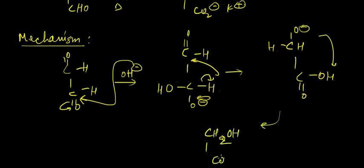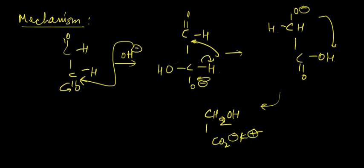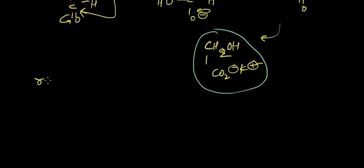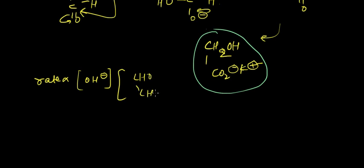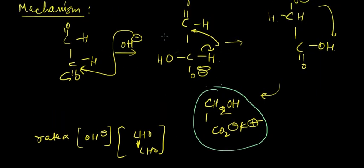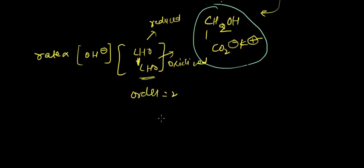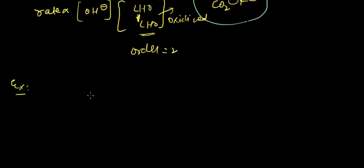The O- takes its hydrogen atom, and as a result we get CH2OH and CO2-. You can attach K+ here, so this is the final product after the intramolecular Cannizzaro mechanism. In this case, the rate is proportional to [OH-] alone, and the order is 2, because one CHO is being oxidized and the other reduced simultaneously.